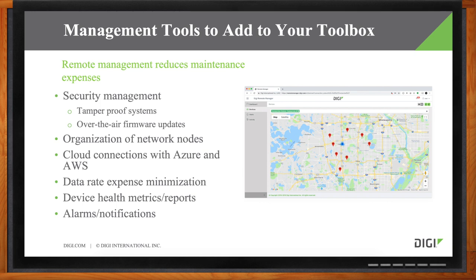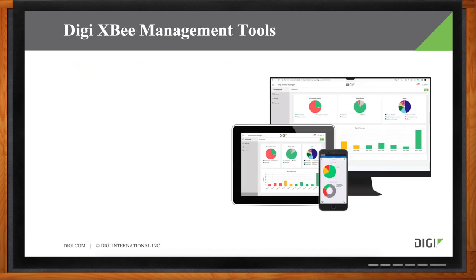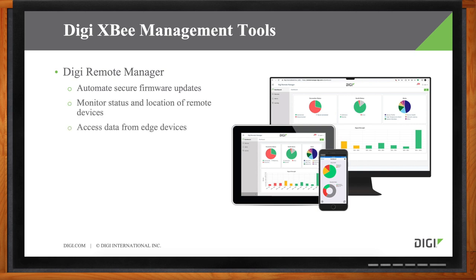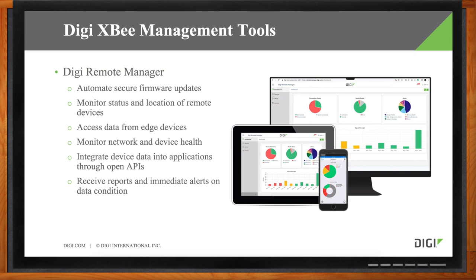Digi Remote Manager does a fantastic job for secure firmware updates as well as all of the tamper-proof systems. Digi Remote Manager helps you organize all of the network nodes — you can easily drag and change the organizational substructure. We easily integrate with any cloud partners. We've got fantastic tools to make sure you keep that data rate expense down, which directly affects the bottom line. DRM also provides device health metrics, reports, and customizable alarms. For example, if you have an IoT product measuring water tank levels, you can set an alarm for good or bad thresholds. The beauty of Remote Manager is it can scale from one device to a million devices, right next to your office or across the globe.